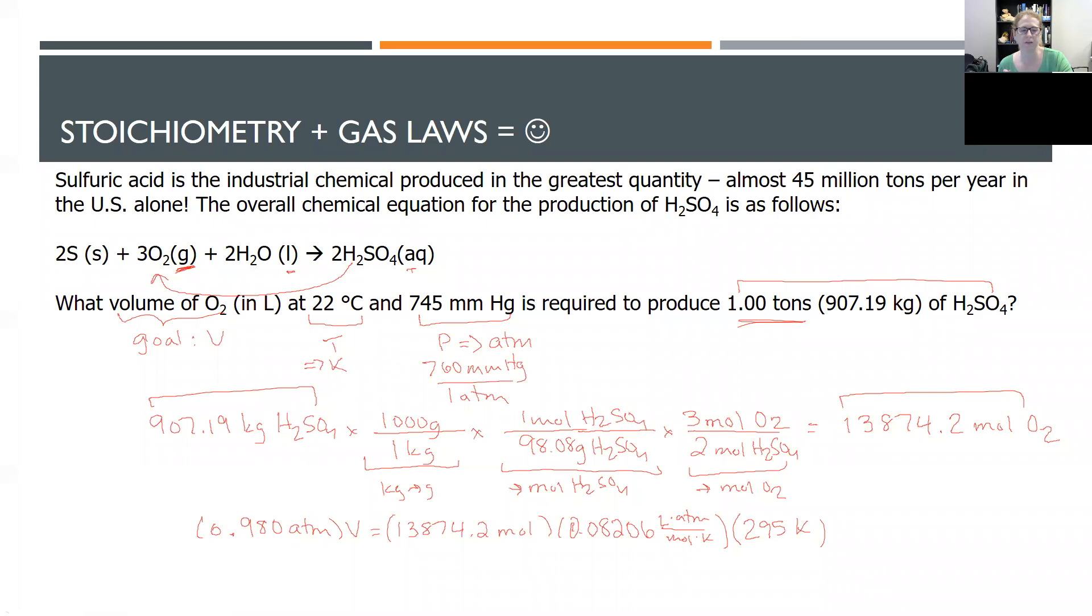Remember that in this setup, we needed to get our pressure to atmospheres. So we have 745 millimeters of mercury. And then the conversion, of course, is to divide by millimeters of mercury to get to atmospheres. That's why I have 0.98 atmospheres down here. And then 22 degrees Celsius, I need to add, right? Degrees Celsius plus 273. So that's why I have 295 Kelvin in this setup. And now it's all over, but the calculation. So pause and try it.